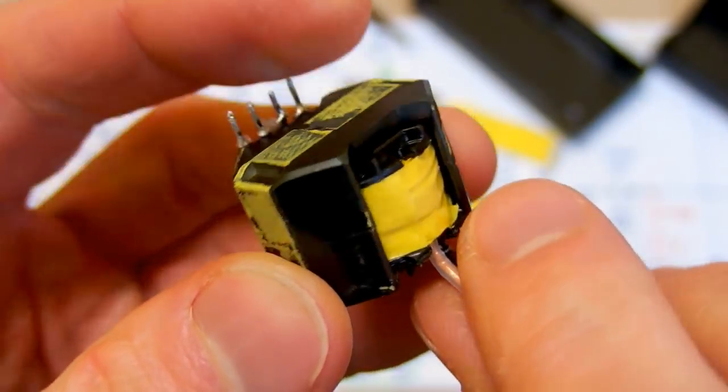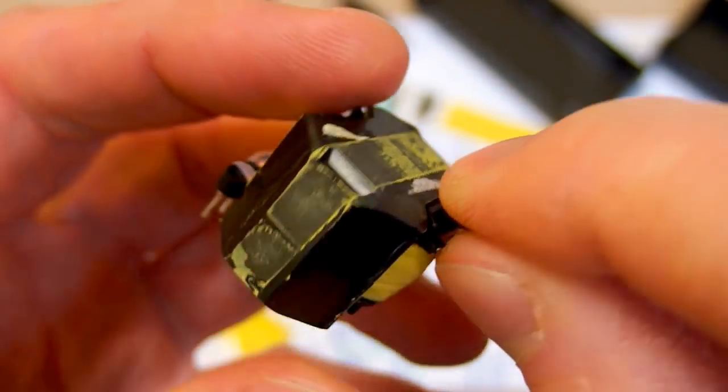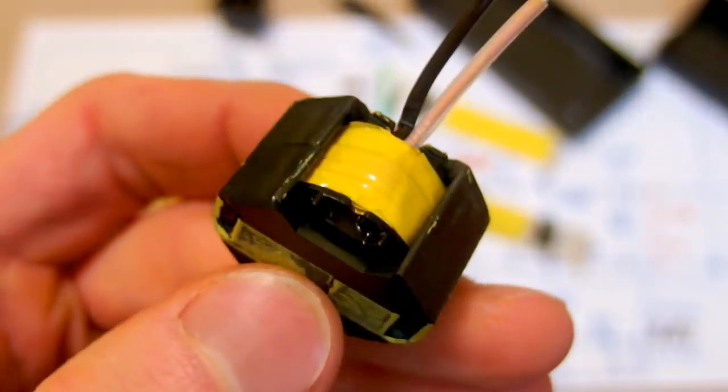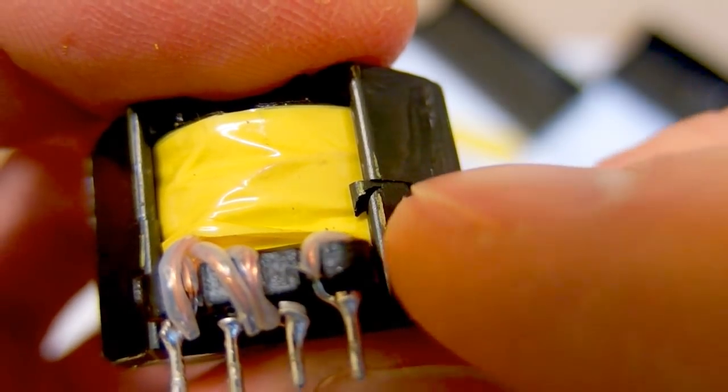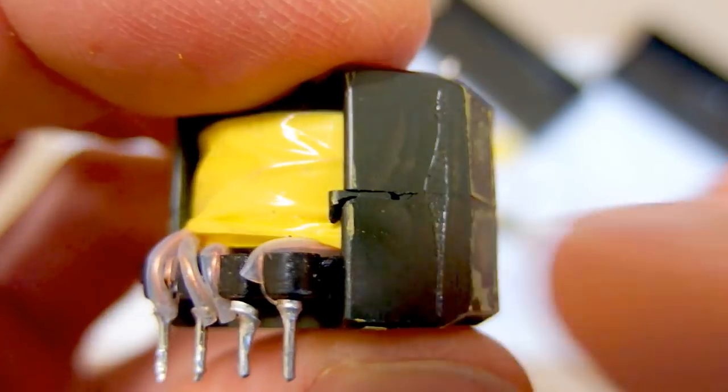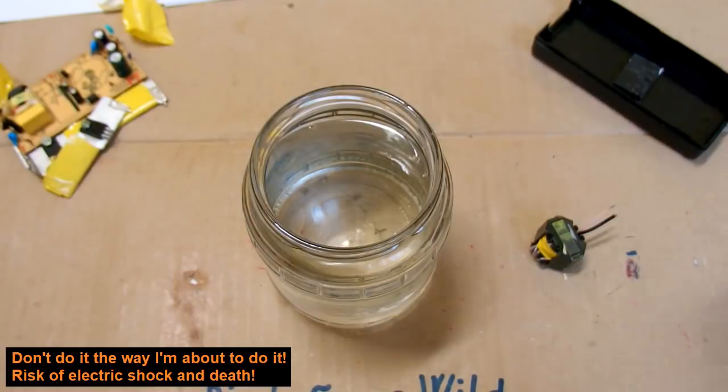So here you can see the ferrite core of it. I could just smash it like usually, but I want to show you how to open it without destroying it so you can reuse it. Here it seems to be a bit chipped from the manufacturer. That's cheapish. So now let's boil it.